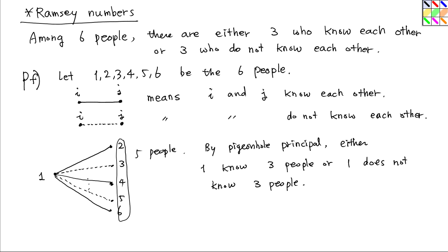In this example, one does know three people. But in some other cases, one may not know three people — one does not know three people. Now we have to consider two cases. Let's consider them on the next page.